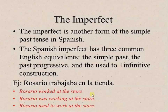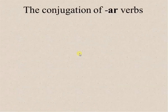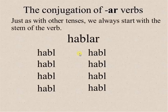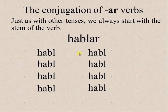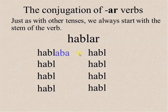Before going through the uses of the imperfect, let's start with the conjugation of AR verbs in the imperfect form. Just as with other tenses, we always start with the stem of the verb. For example, hablar — you drop the AR, and then you have the stem. Then you're going to add the endings.